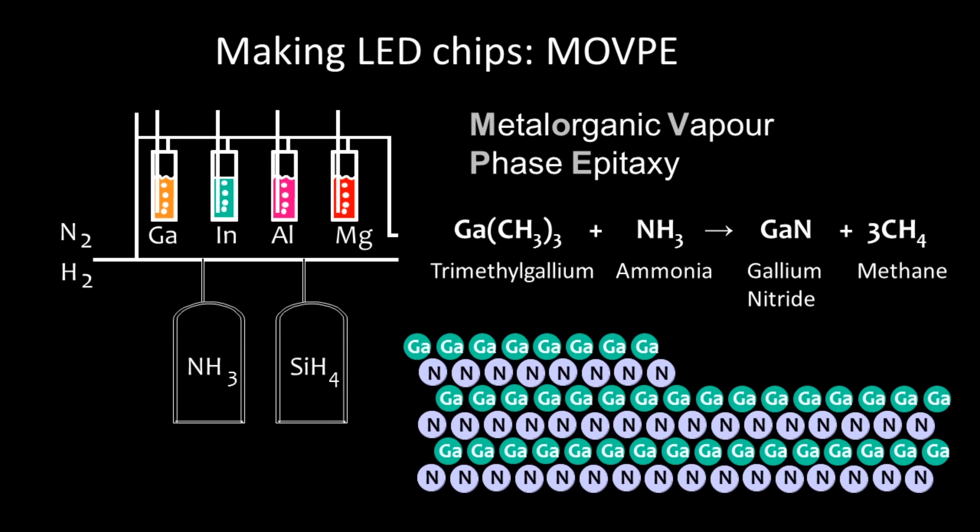And we form the gallium nitride crystal by laying down, atom by atom, layers and layers of gallium and nitrogen atoms through this reaction. So one of the key pieces of equipment within our laboratory are the big crystal growth systems, which we call reactors, within which these reactions take place. And we grow the crystal layers, which enable us to form devices.